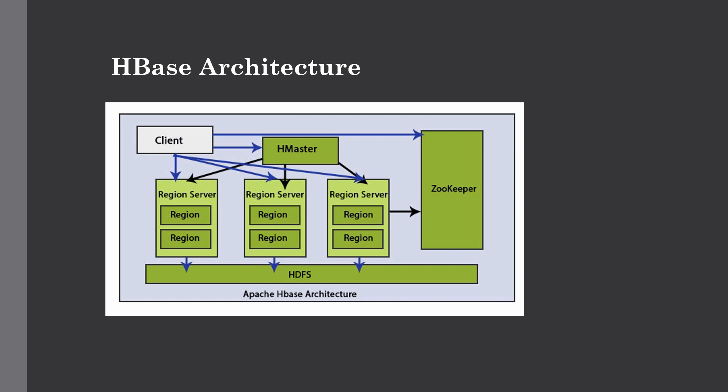The master server assigns regions to the region servers and takes the help of ZooKeeper for this task. ZooKeeper is used for assigning regions to region servers. The master server also handles load balancing of regions across region servers, unloads busy servers, and shifts regions to less occupied servers, taking responsibility for resource allocation.